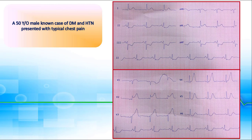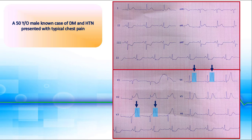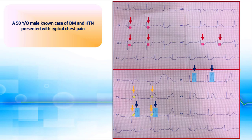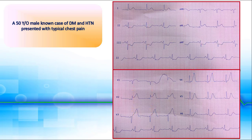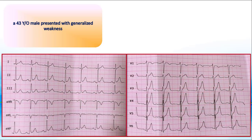This strip belongs to a 50-year-old male, a known case of diabetes and hypertension, presented with typical chest pain. There are broad-based and symmetrical hyper-acute T waves in V3 and V4, with ST elevations in V2 and V3, and reciprocal ST depressions in inferior leads — so acute ischemia is the main diagnosis. The second strip is taken from a 43-year-old male presented with generalized weakness.